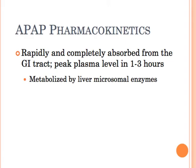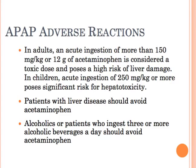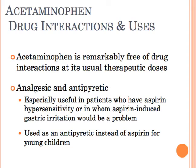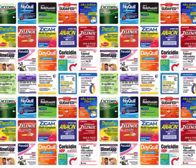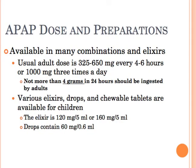Acetaminophen is metabolized in the liver, excreted in the kidneys, and its half-life is about one to four hours. With large doses, there's a metabolite that's thought to be hepatotoxic. A single ingestion of 12 grams of acetaminophen is considered a toxic dose and can pose a high risk for liver damage. Alcoholics or patients who ingest three or more alcoholic beverages should avoid taking acetaminophen. The advantage of acetaminophen is that it's remarkably free of drug interactions at usual doses, and it's used as an analgesic and antipyretic. It's available in all sorts of products, though people sometimes don't recognize how many different products contain acetaminophen.